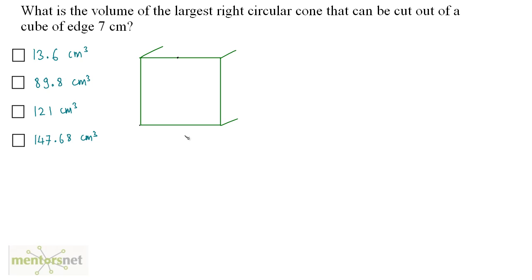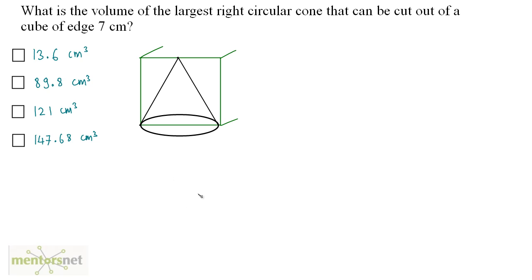What is the volume of the largest right circular cone that can be cut out of a cube of edge 7 cm? Consider this cube — the largest cone that can be cut out from it must have its diameter equal to the edge of the cube, which is 7, and the height of the cone must also equal the edge of the cube, so height is also 7.